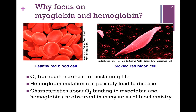We might first ask ourselves, why are we considering myoglobin and hemoglobin? First of all, we know a great deal about them, and they're certainly critical for life in their role as oxygen transporters. There's also a medical significance in that a mutation in the hemoglobin gene can lead to disease — sickle cell anemia. In the upper right, we see an illustration of a sickled red blood cell. More fundamentally, once we understand the oxygen binding properties of myoglobin and hemoglobin, we learn some general characteristics and fundamental principles that are widely applicable in many areas of biochemistry, and so it will serve us well in our future studies.